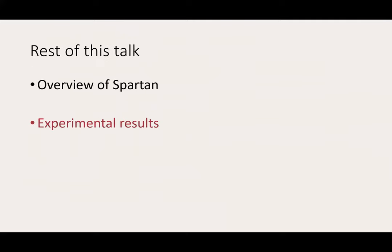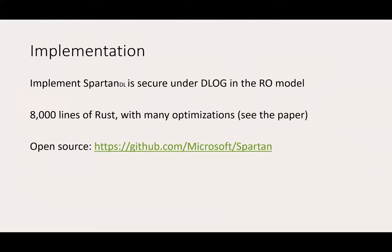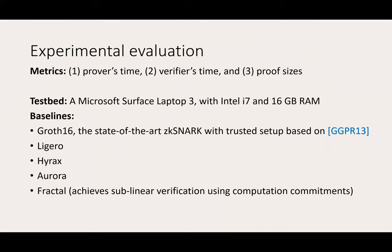We implemented a member of the SPARTAN family, which is secure under the discrete log assumption, in about 8,000 lines of Rust. The code is open source and available on GitHub. In our experimental evaluation, we focus on three metrics and run experiments on a Microsoft Surface Laptop 3 with 16 gigabytes of RAM. As baselines, we use five schemes: Groth16 is the state-of-the-art ZK-SNARK with trusted setup based on GGPR. Ligero, Aurora, and Hyrax do not require a trusted setup but incur linear-time verification for arbitrary circuits. Finally, Fractal is a recent ZK-SNARK that achieves sublinear verification costs for arbitrary circuits using computation commitments.